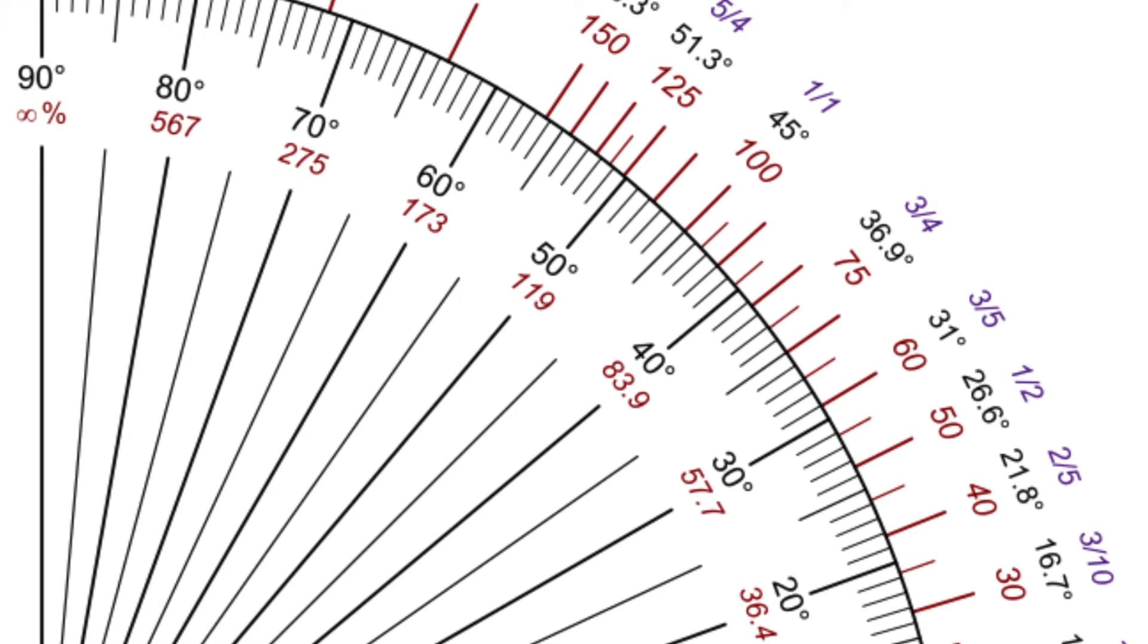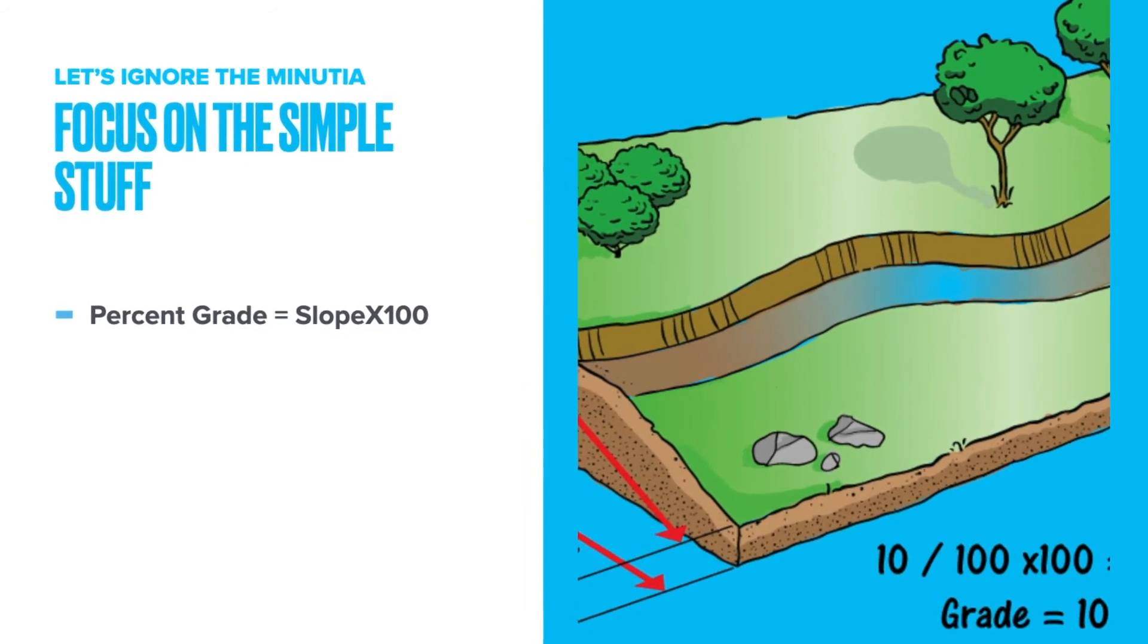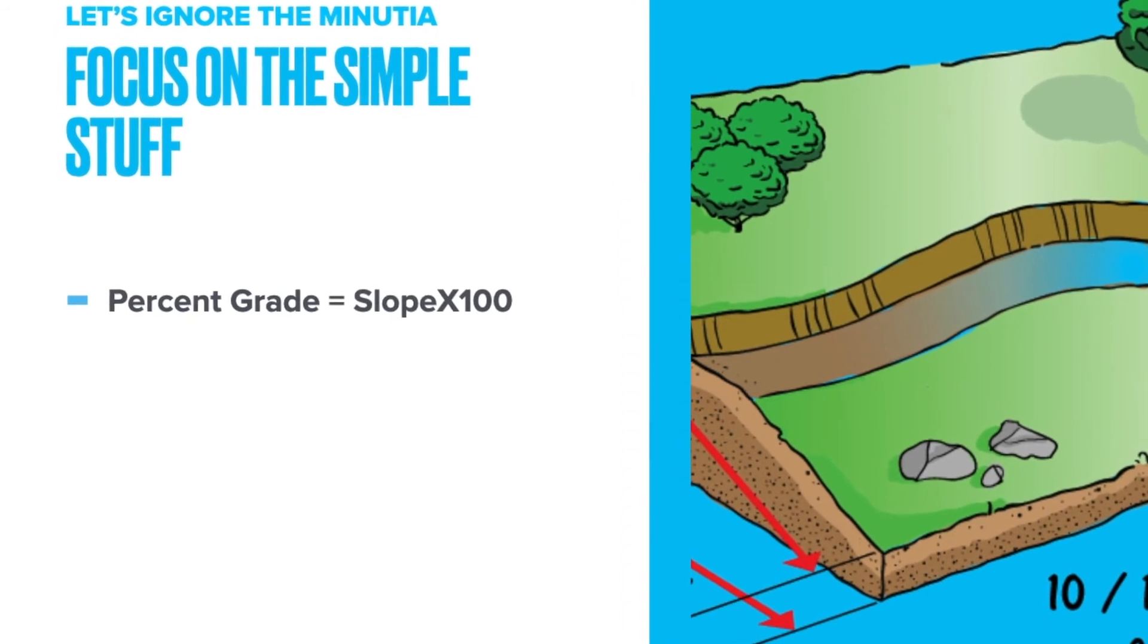This puts 1000% grade at just over 84 degrees, and at 90 degrees, the percent grade is infinite. There's a bunch more math involved too - arctans and tangent gradients - but we could ignore all that for the much simpler explanation of slope times 100.